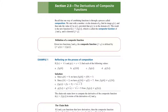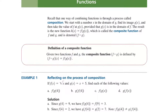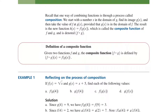As you know, if F and G are two functions, the composite function is denoted by F∘G, and it is defined as F∘G of x equals F at G of x.